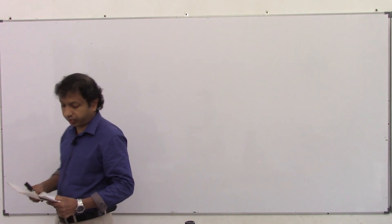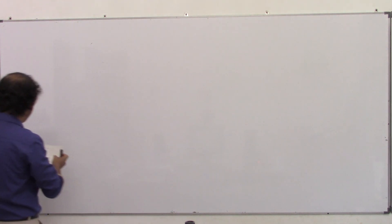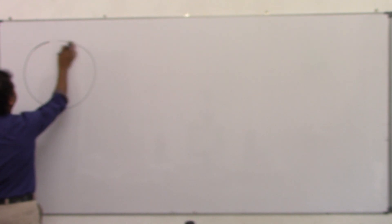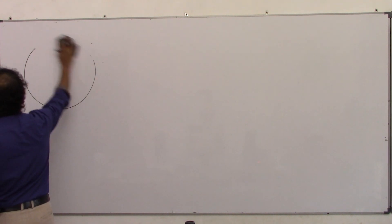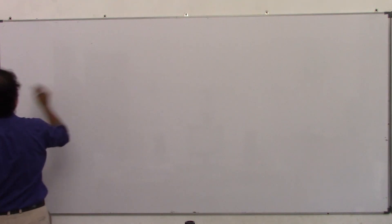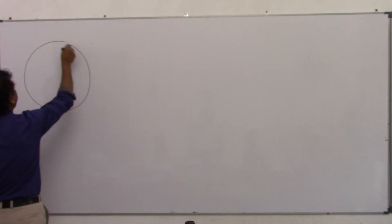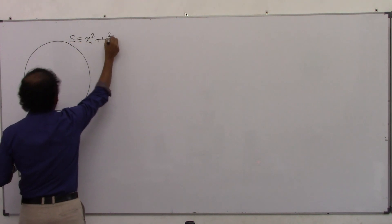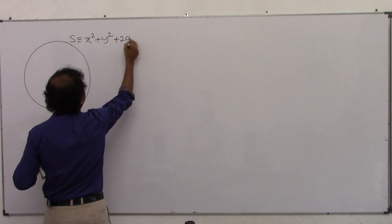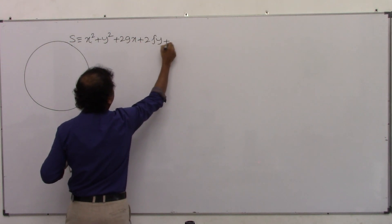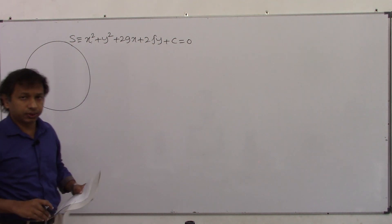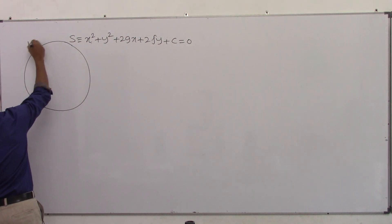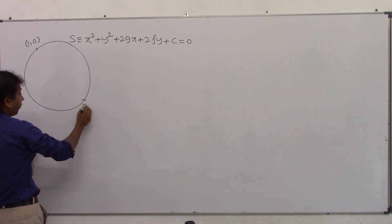So we are going to assume this circle with a standard equation. I take the equation of the circle as x²+y²+2gx+2fy+c=0. We assume the circle as this, and now we are given that the circle passes through the points (1,0) and (0,1).